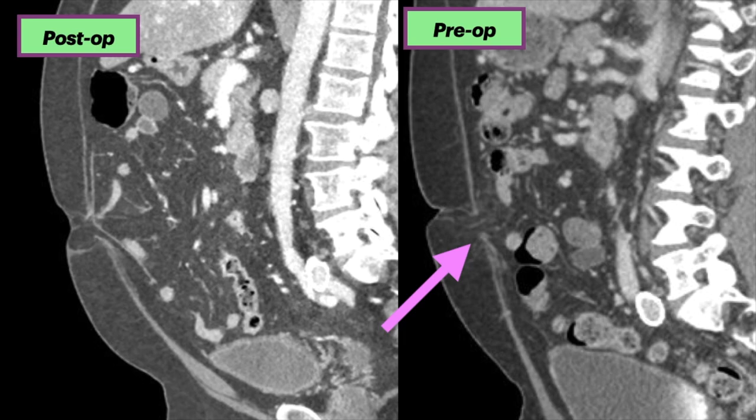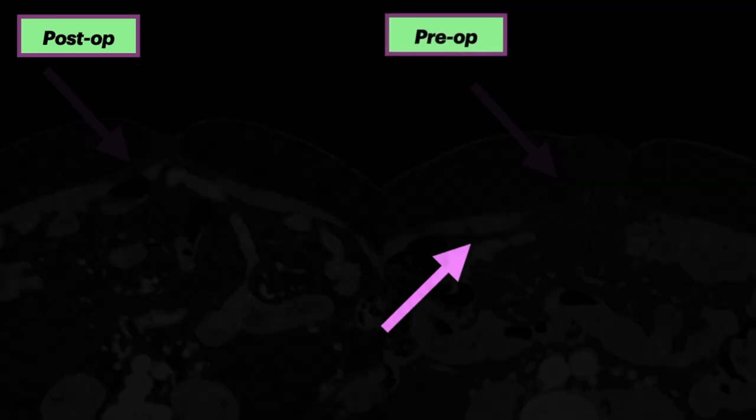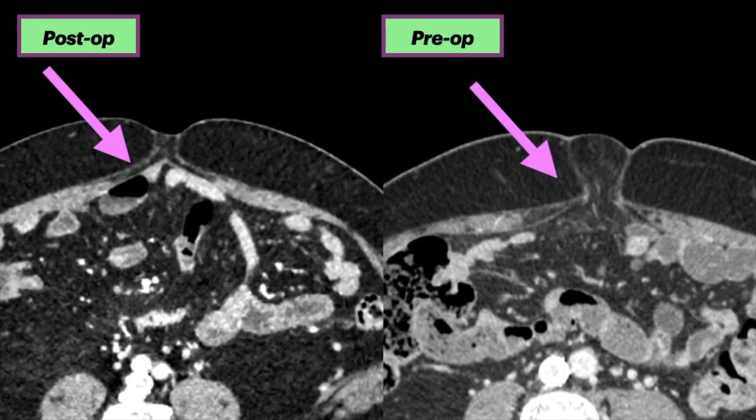Intraoperatively, a hernia was identified. Fat contents were then reduced. The defect was measured at about three by three centimeters. The team then proceeded with placing a 10 by 15 centimeter parietex mesh, which allowed large coverage of the defect.